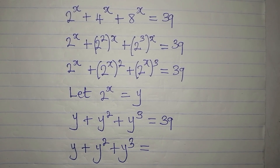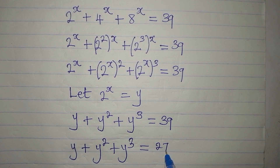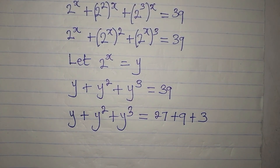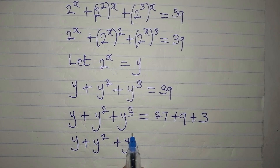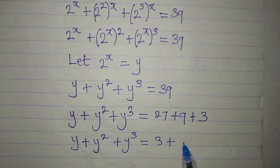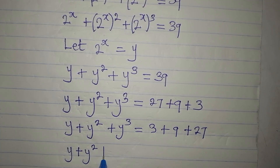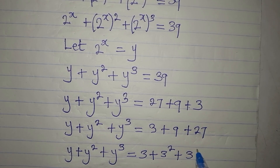Now we are going to express this in a comparable form. We can write 39 as 27 plus 9 plus 3. So: y plus y squared plus y cubed equals 3 plus 9 plus 27. Since y is standing in for 3, we can write the right-hand side as 3 plus 3 squared plus 3 cubed.